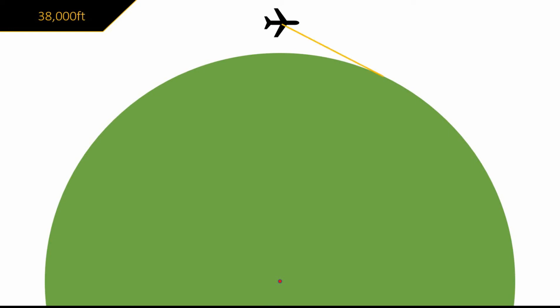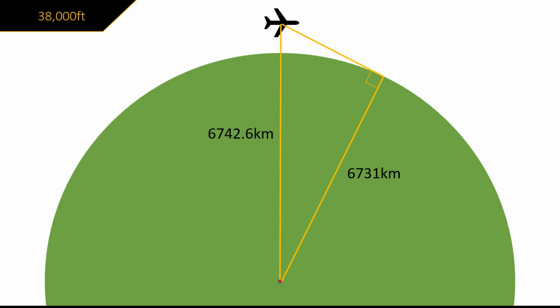That was 38,000 feet. Now here's the earth and here's the plane, with the earth's centre point represented by this red dot. None of this is to scale. This is the line of sight to the horizon, and these two lines represent the distances to the centre of the earth from the horizon and from the plane. Because the line of sight is tangent to the circle, and tangent lines are always at 90 degrees to radial lines, we know that this is a right angle triangle — with a distance to the earth's centre of 6,731 kilometers, and the distance from the plane to the centre at 6,742.6 kilometers. This is just the radius of the earth plus my altitude.